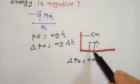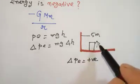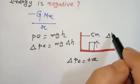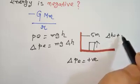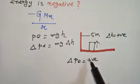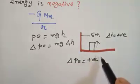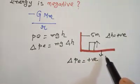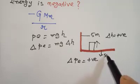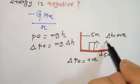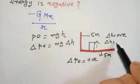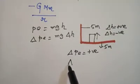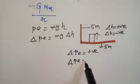Why? Because I have pulled this box or brick up to five meters, so my delta H is positive, and that is why my change in potential energy is positive. Now what happens if I try to pull the brick down by five meters? The delta H — the change in height — comes to negative, and hence the change in potential energy is also negative.